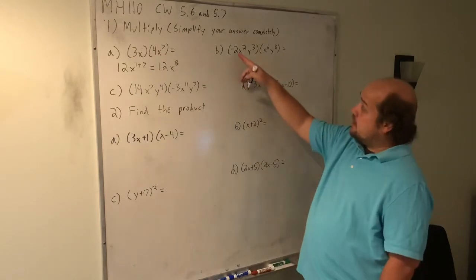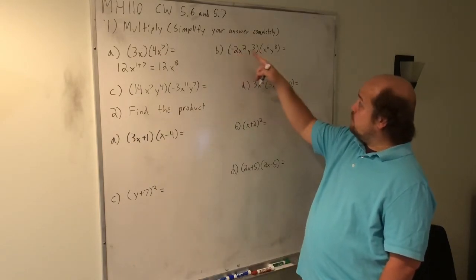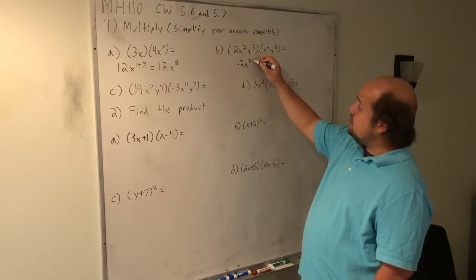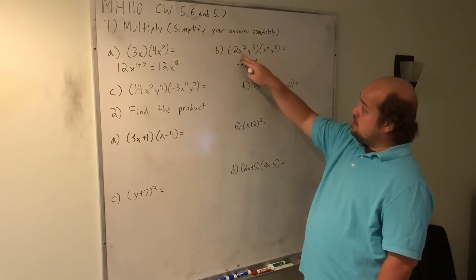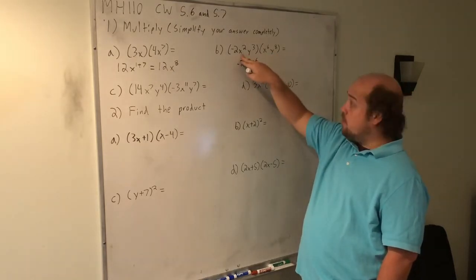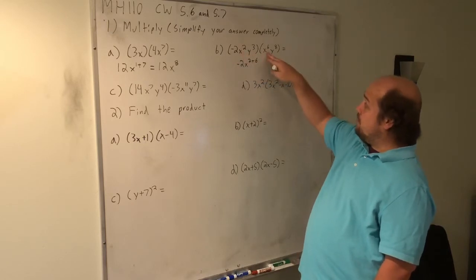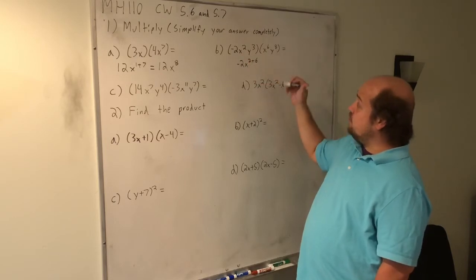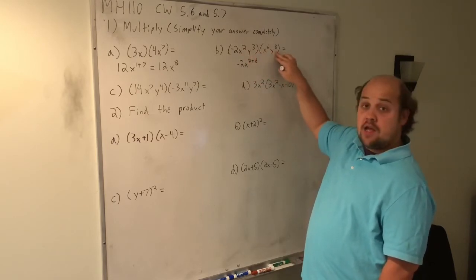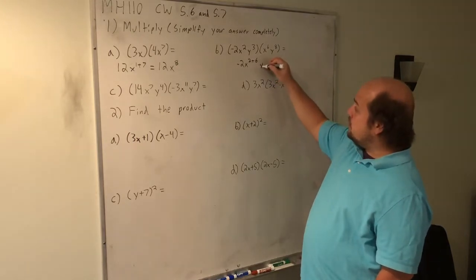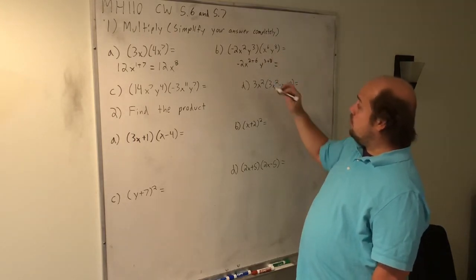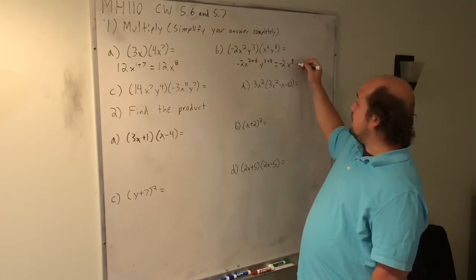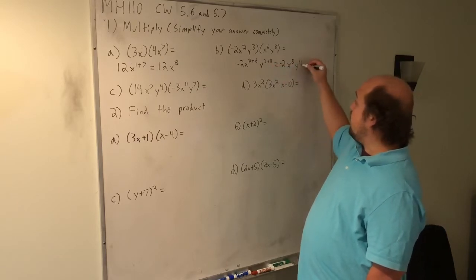For part b, I start with the numbers. Negative 2 is being multiplied by an understood 1, so that gives me negative 2. The first power of x squared is being multiplied by the second power x to the sixth. My rule of exponents says I add those exponents. I then have y to the third and y to the eighth, so this becomes y to the 3 plus 8. When I combine these, I still get negative 2. 2 plus 6 gives me x to the eighth. 3 plus 8 gives me y to the eleventh.